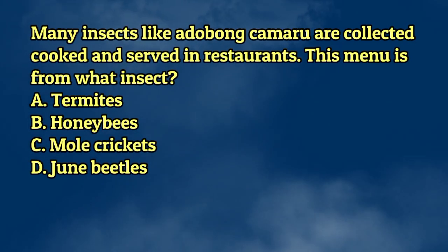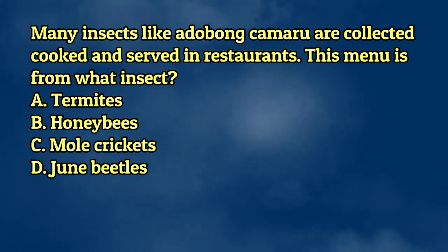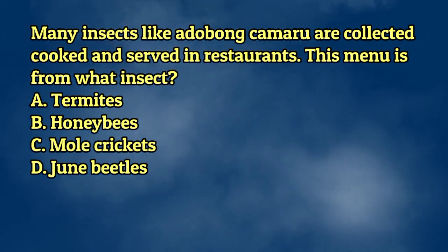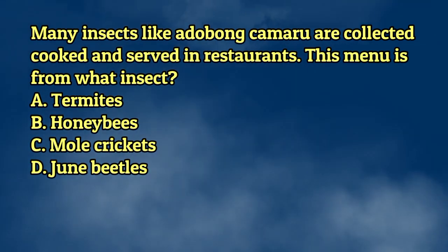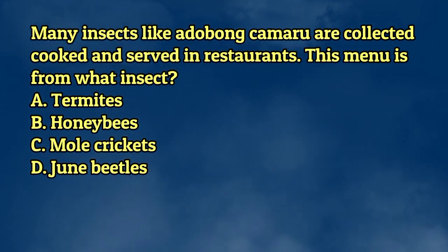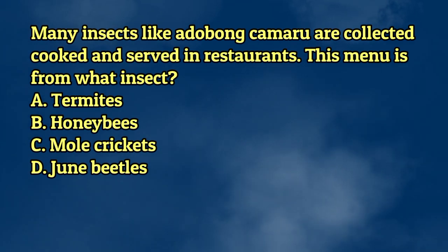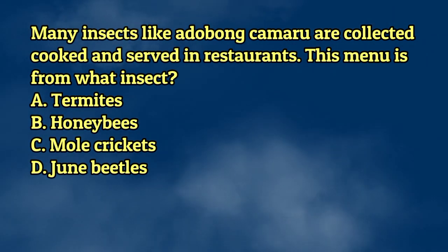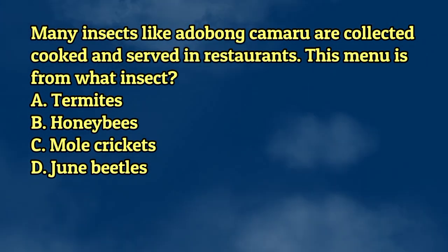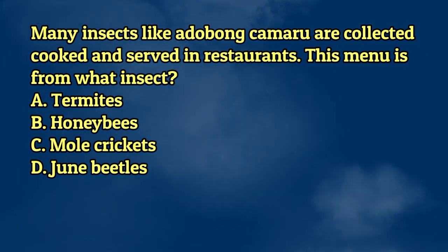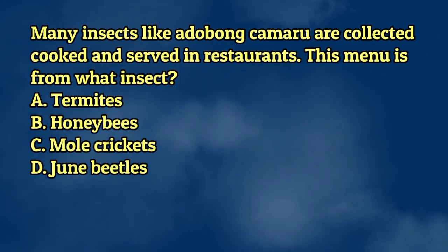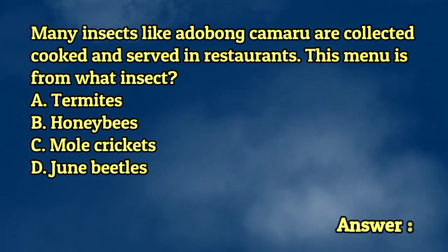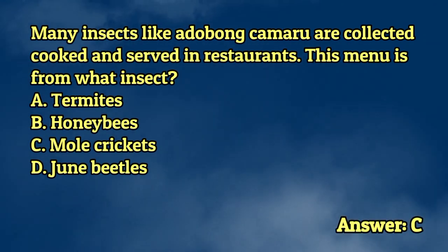Many insects like autobong camaru are collected, cooked, and served in restaurants. This menu is from what insect? A. Termites. B. Honeybees. C. Mole crickets. D. June beetles. The answer is letter C.